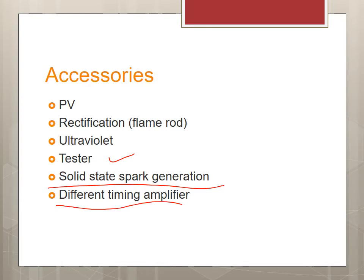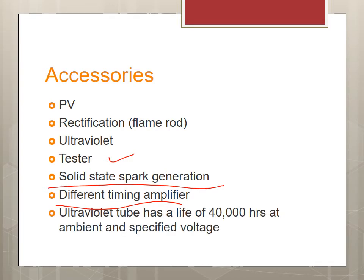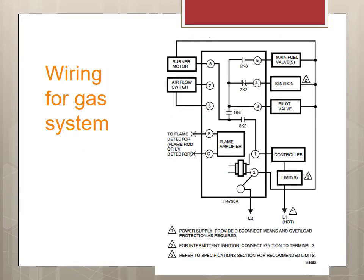These amplifiers have pre-ordered timing for the specific boiler and must match that boiler — they are not interchangeable. Always check the timing. The ultraviolet tube has a life of 4,000 hours, so this should be calculated and logged so you know when to change the sensors. The wiring for gas is different from the wiring for oil. Terminal 5 goes to the main valve, ignition is terminal 4, pilot is terminal 3, and the neutrals are clearly labeled.